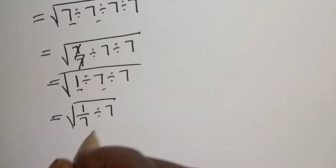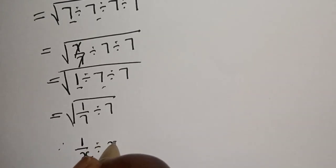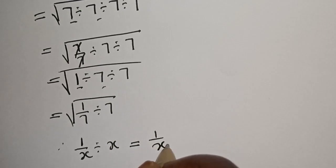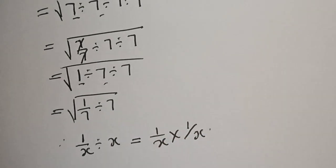Now, take note of this. If you have 1 over x divided by x, in order to change this to multiplication sign, this is equal to 1 over x multiplied by 1 over x.